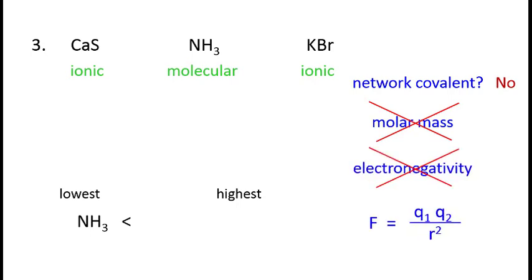Instead, we go back to Coulomb's law. Remember that we're trying to rank forces that hold the units, in this case the ions, together. The charges in CaS are 2+ and 2-. In KBr, the charges are 1+ and 1-. The higher charges in calcium sulfide mean that the ions are held together more tightly, so calcium sulfide will have the highest melting point of these materials.